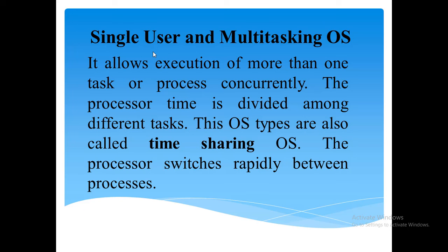The single-user and multitasking OS allows execution of more than one task, all processes concurrently — happening at the same time. The processor time is divided among different tasks. These operating system types are also called time-sharing OS. The processor switches rapidly between processes. A good example: the user can listen to music on the computer while writing an article using word processor software, and can switch between applications and also transfer data between them.